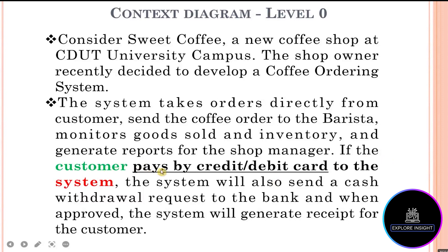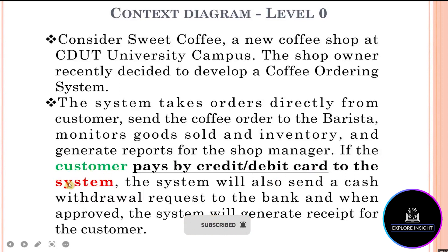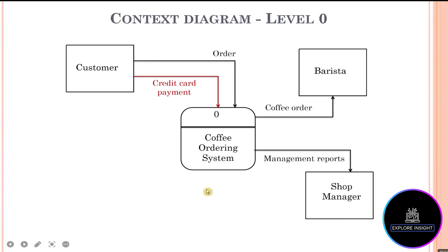Next: if the customer pays by credit or debit card to the system — let's pause here. We have the external entity customer and the process component. Paying by credit or debit card shows the action — that is the data flow information between the customer and the system. So the data flow is labeled 'credit card payments,' flowing from the customer to the coffee ordering system.